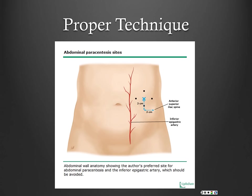The right lower quadrant is also an acceptable area, but the problem is these patients sometimes have dilated cecums, particularly if they're on lactulose. The cecal wall is the thinnest part of the colon, so your risk of perforation there is a little higher. I typically try to do left lower quadrant unless there's some reason such as massive splenomegaly.